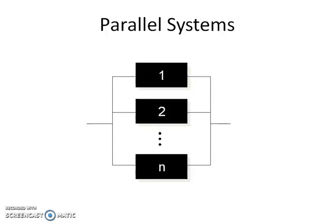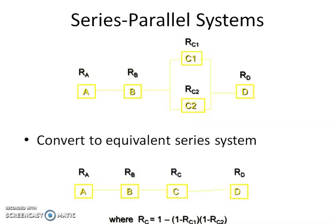If we take the example of parallel system, all the components are arranged in parallel, 1 to n. Then reliability of the combined system Rs is 1 minus (1 minus R1) into (1 minus R2) and so on up to (1 minus Rn).